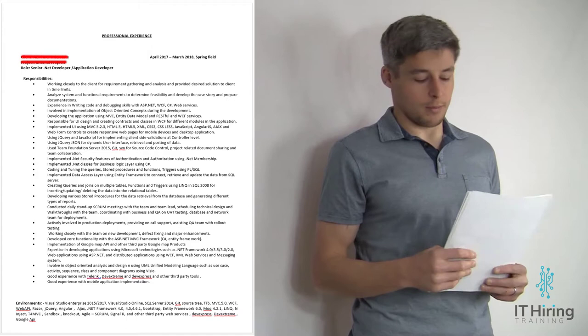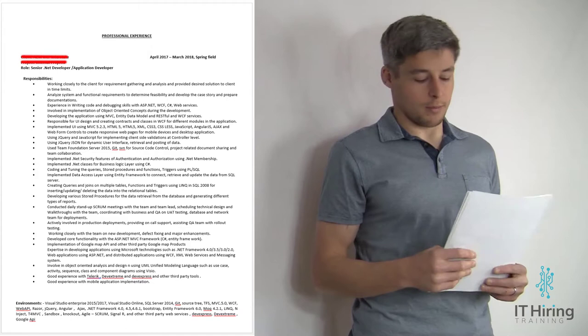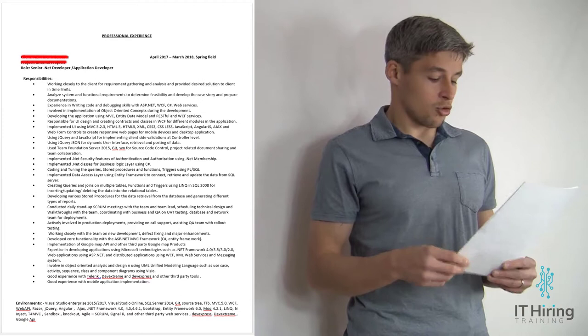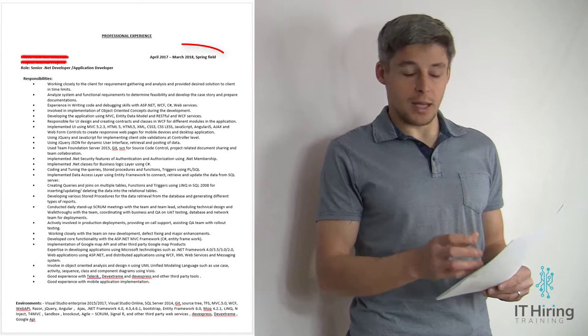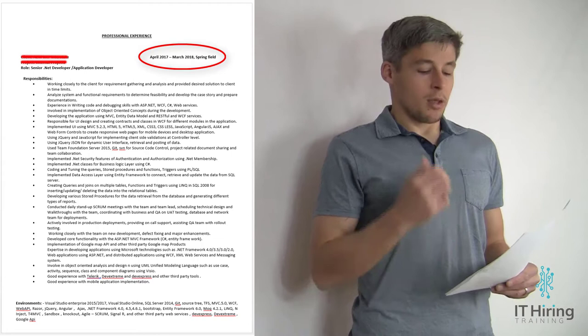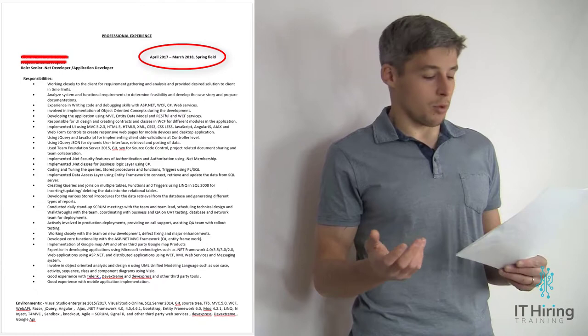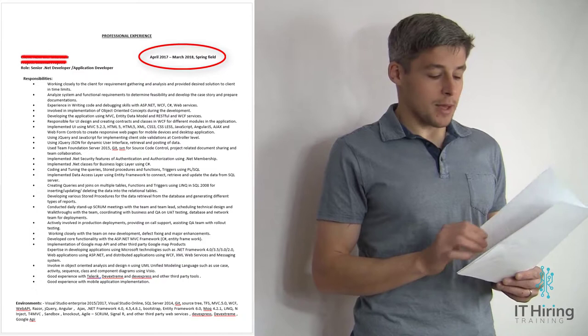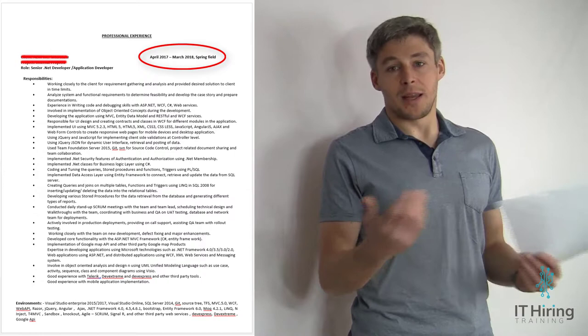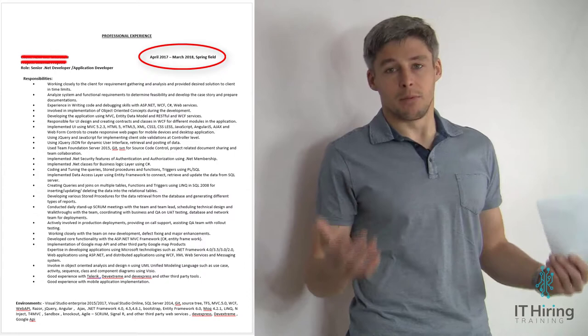Page two is dedicated to a single place of employment. You'd probably imagine this to be a decade-long tenure requiring a whole page to describe all achievements — but checking the dates, this person only spent less than a year in that position. Not surprisingly, I'm reluctant to read through page two as well, and at this point a decision is pretty much formed in my head. Looking through the rest of the resume, we see that for the most part this person spent less than a year at any single place of employment — a really big red flag for any employer. The verdict is a most confident rejection.